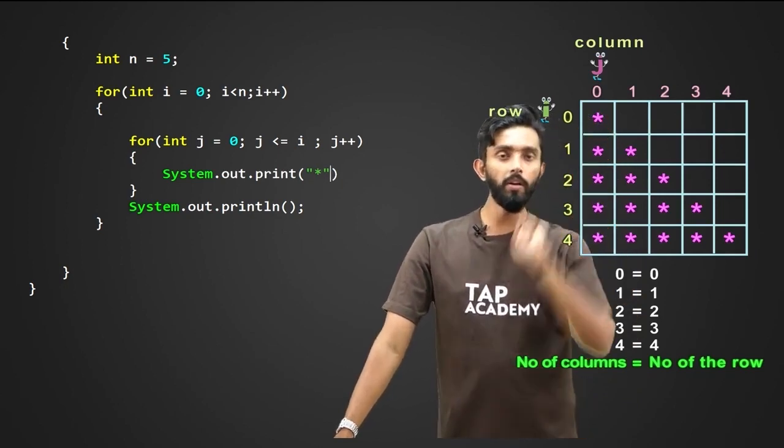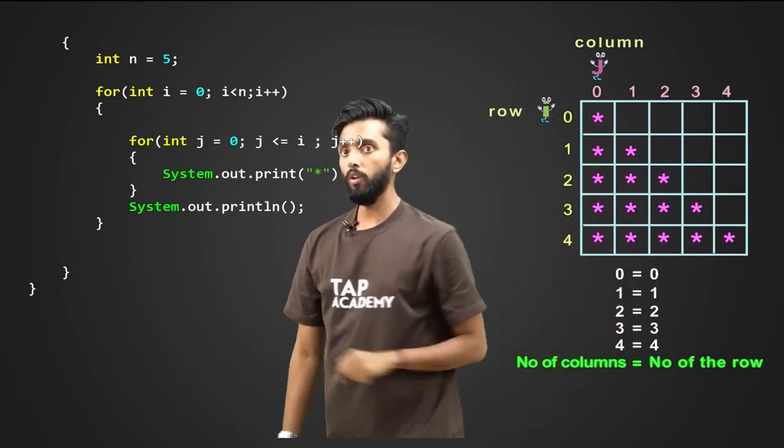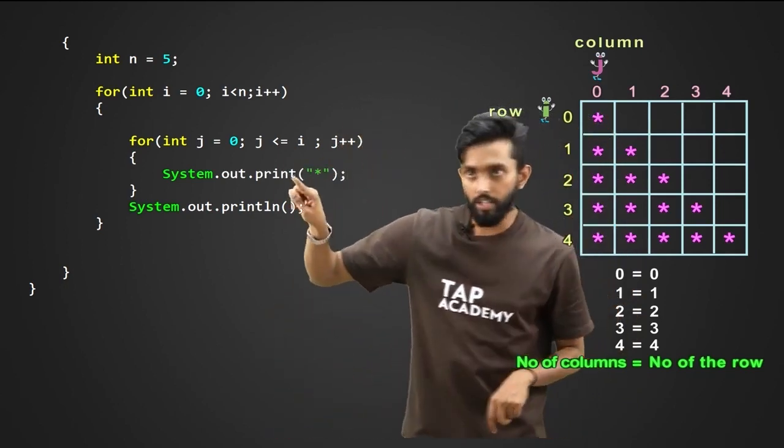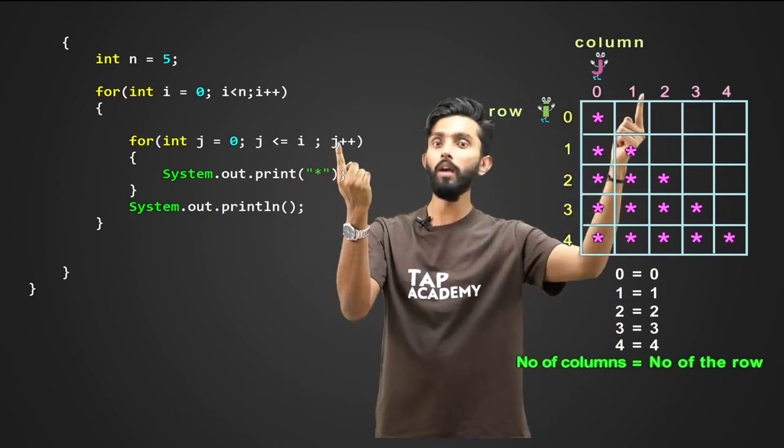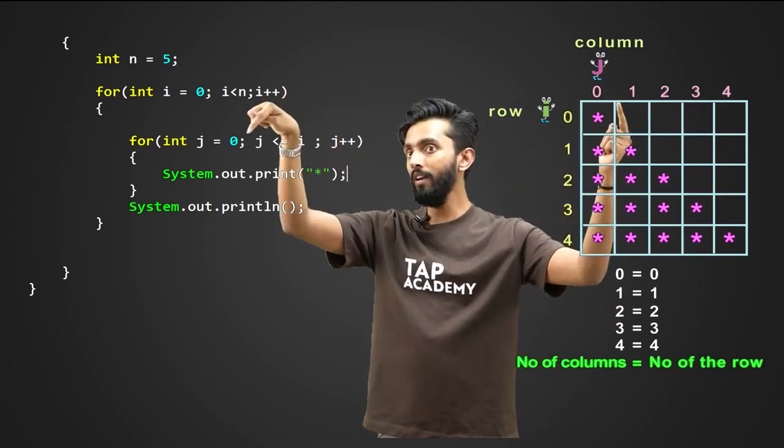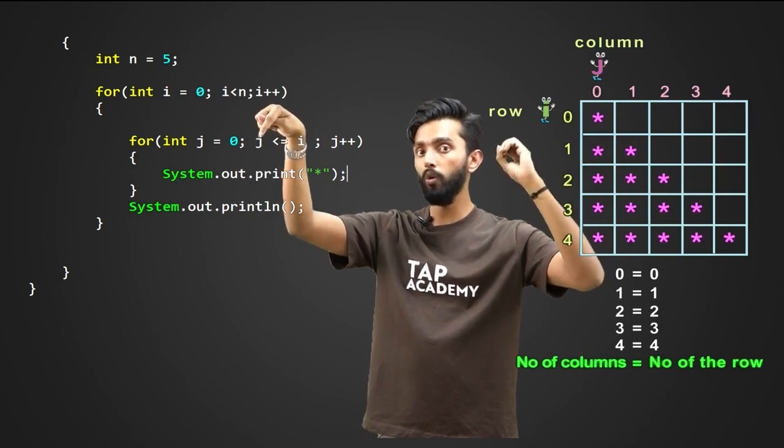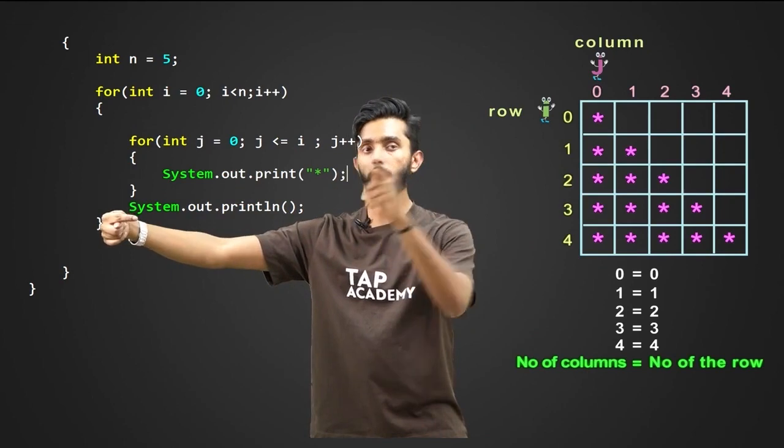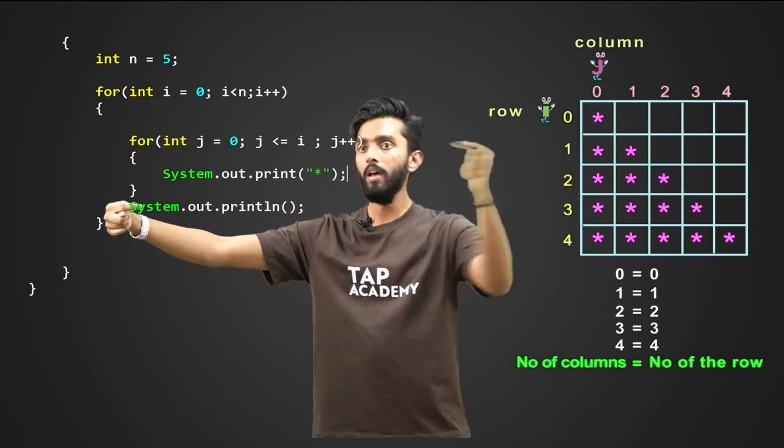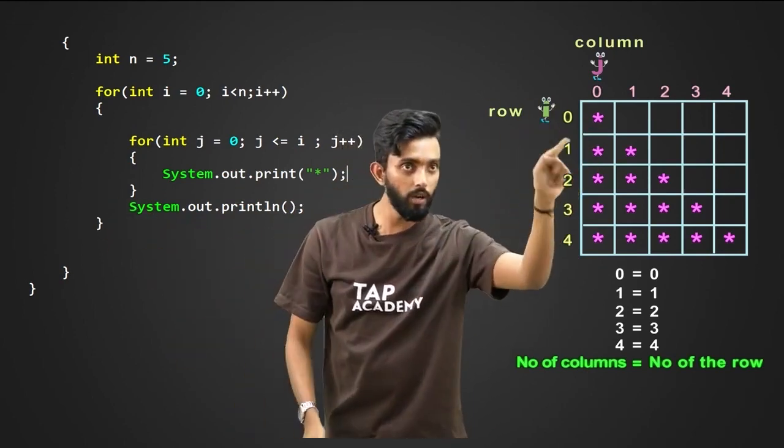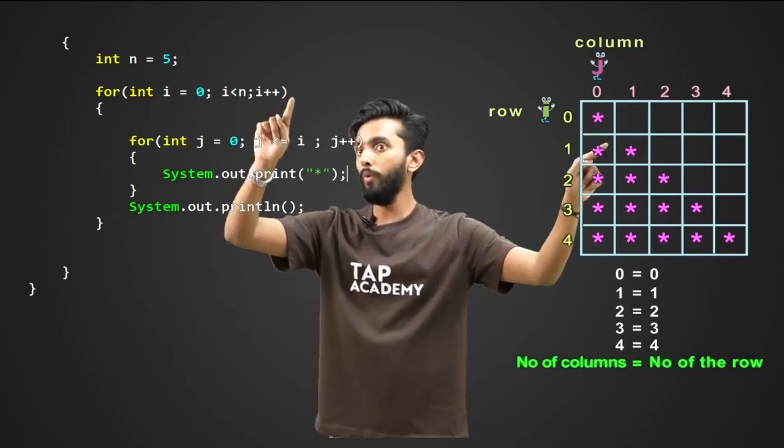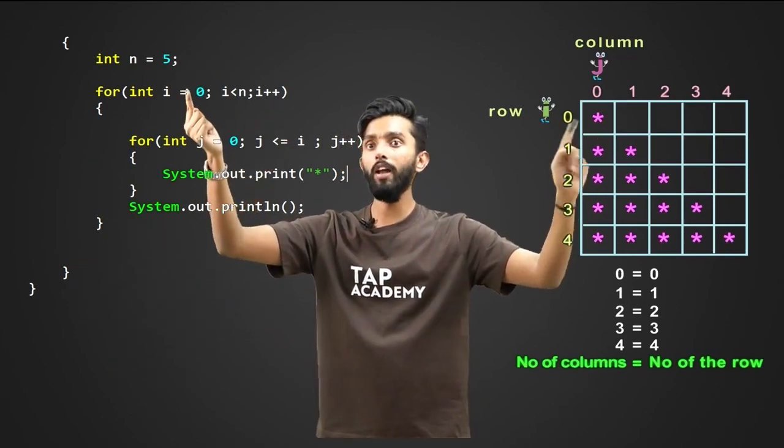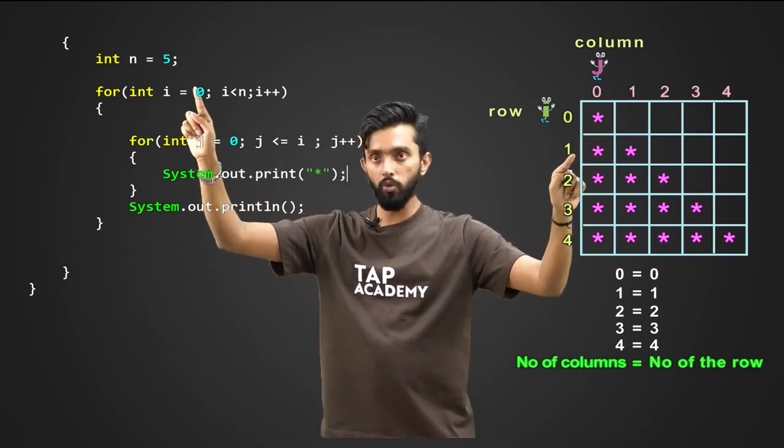Next, j plus plus. Means j value will become one. Is one less than equal to zero? No. Condition is false. You will come outside. So how many stars got printed? Just one. System.out.println. Cursor comes to the next line. You are within a loop. I plus plus. I value now becomes one. I is one.